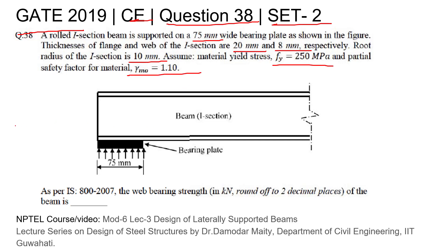This is the diagram given. As per IS 800-2007, we need to find the web bearing strength of the beam in kilonewtons.